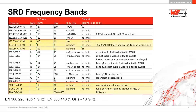Looking at the SRD frequency bands slide, there are about four popular bands: the 169 MHz band, the 433 MHz band, the very popular 868 MHz band, and also 2.4 GHz. These four bands are available to us.